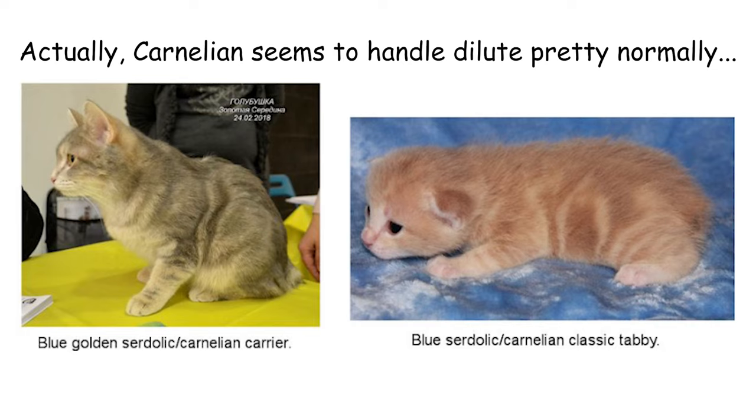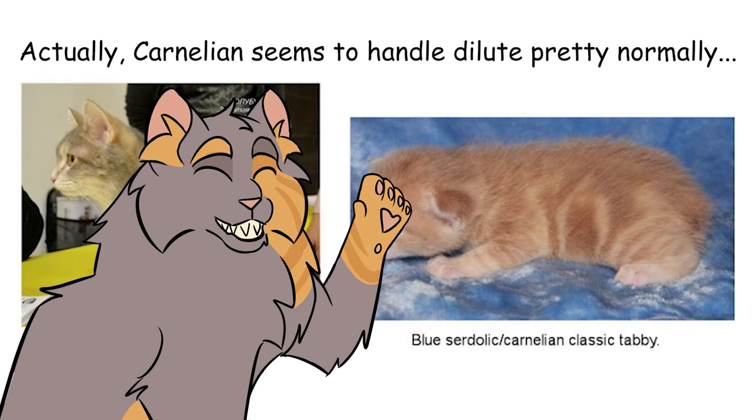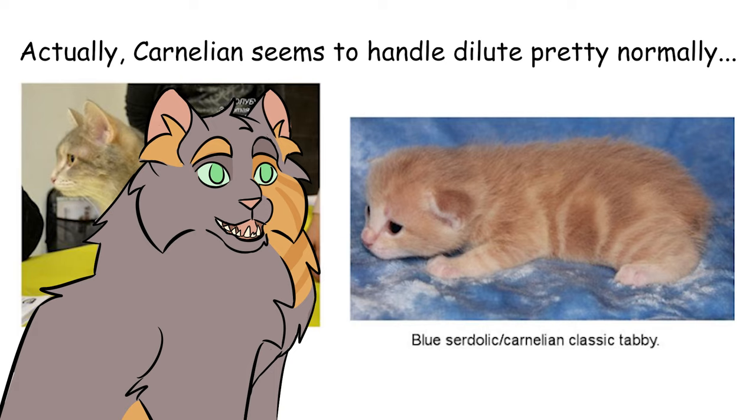I would assume that dilute affects amber and russet in the same way it affects regular gingers, by turning them cream, but I don't know for sure. The jury is fully out on carnelian. I'm so sorry, I got no clue. And finally, amber, russet, and carnelian don't affect ginger cats because they're already ginger.